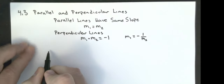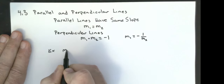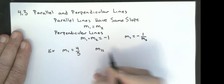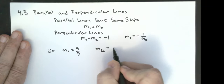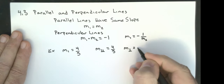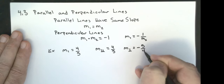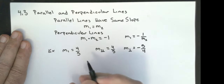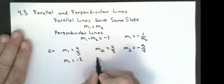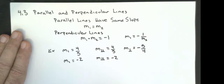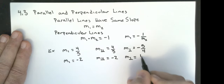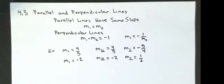For example, if my original line has a slope of 4/5, the slope of the parallel line is going to be the same. The slope of the perpendicular line is going to be the opposite and then flip it over. If I start out with a slope of negative 2, the parallel line will have a slope of negative 2, and the perpendicular line will have the opposite — the negative becomes a positive — and flip the two over to get one half.